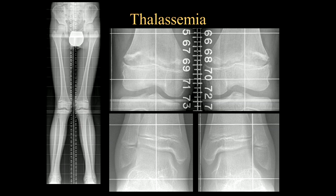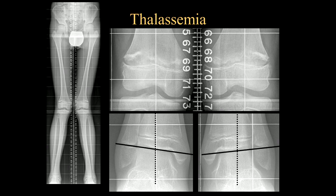Finally, here's a patient showing the growth disturbances that are very classic in patients with thalassemia. Looking at these leg length views, you can see much irregularity of the distal femoral metaphyses, slanting of the ankles, and looking at the overall orientation of the legs, there is a genu valgum as well as ankle valgum.